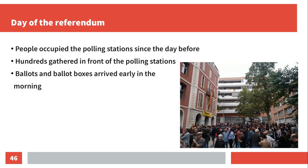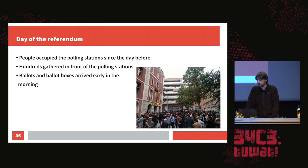Day of the referendum. It was clear that federal police would come and try to close down polling stations by force. People had been sleeping from the day before, occupying the polling stations to stop the police from closing them. Early in the morning around 5 o'clock, hundreds of thousands of people gathered in front of polling stations and stayed all day trying to block police from entering. The ballots and ballot boxes, which the police had been searching for a month, magically arrived in the early hours of the day at the polling stations.